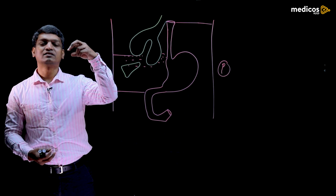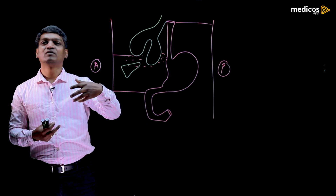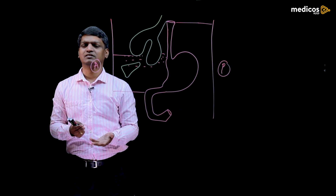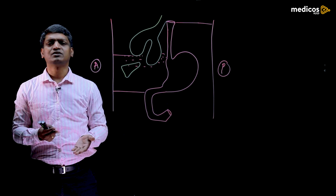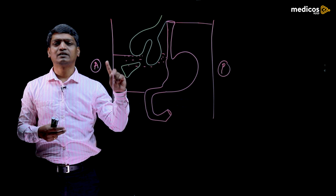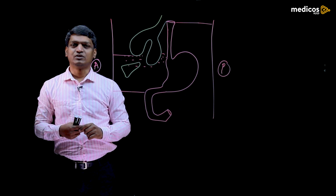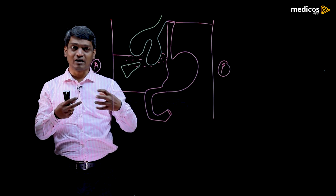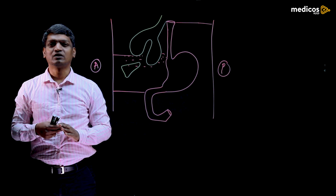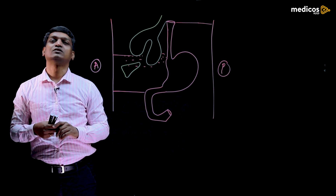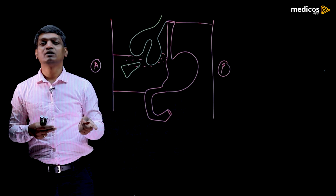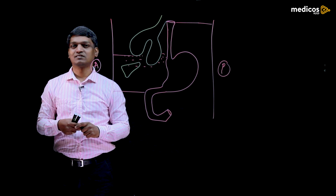So the esophagus elongates, the cells proliferate and almost obliterate the lumen, then recanalization happens — cell death occurs and the lumen is restored. Finally, you get the esophagus. The esophagus is attached dorsally only with the mesoesophagus, which later disappears and is absorbed. Then the esophagus is pushed towards the dorsal portion of the thorax. That is how you can see the esophagus in the posterior mediastinum of the thorax.